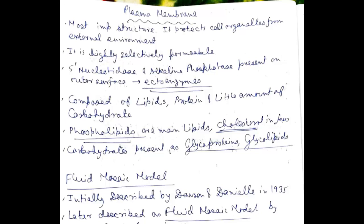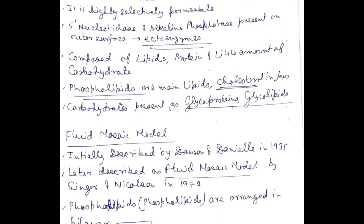Plasma Membrane is mainly composed of lipids, proteins, and also a little amount of carbohydrate. Phospholipids are the main lipids. Cholesterol is present in a little amount. Carbohydrates are present as glycoproteins or glycolipids.